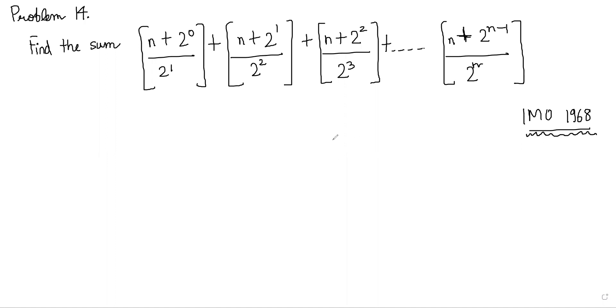It's a fairly easy problem once you realize there's an identity that helps us calculate floor of x plus half. The identity says that floor of x plus half equals floor of 2x minus floor of x.